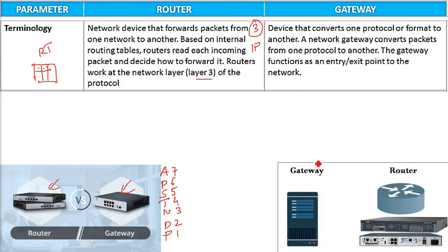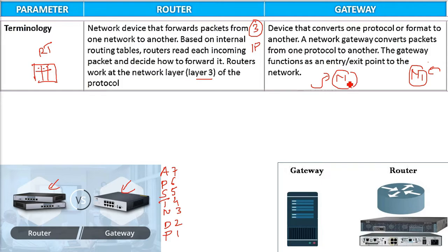Coming to Gateway: it is a device that converts one protocol or format to another. If this is one network and this is another network, and the protocols are different, then in order to connect these two different-protocol networks, we use a Gateway. The network gateway converts packets from one protocol to another.